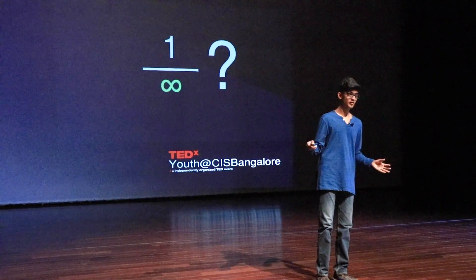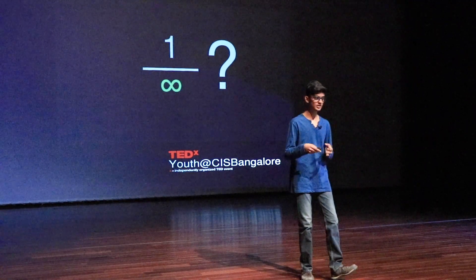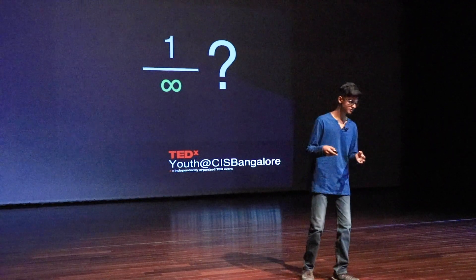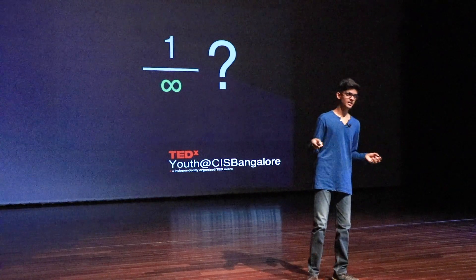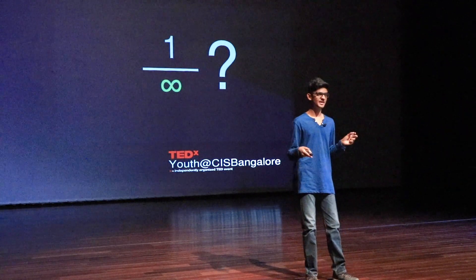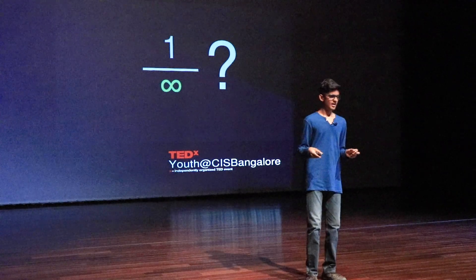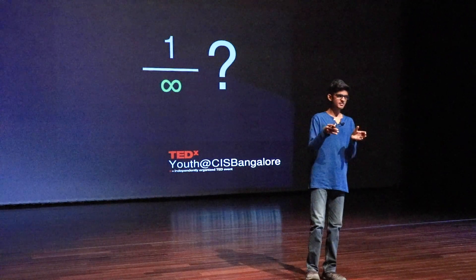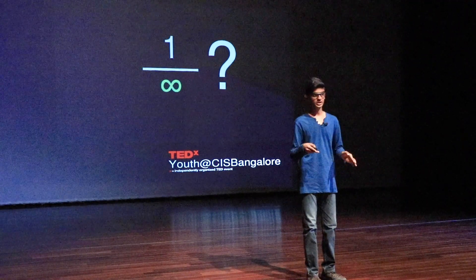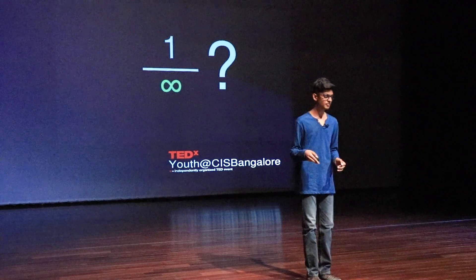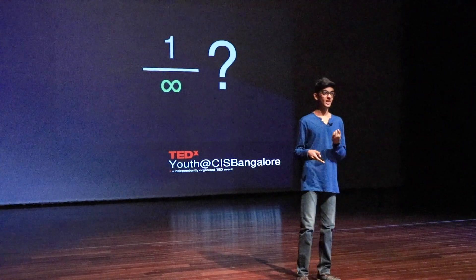What would 1 over infinity be? I can't really tell you what 1 over infinity is, but I can tell you what happens as you get closer and closer to it. As you would have already noticed, the length of the line kept getting shorter and shorter. The length kept approaching zero, but it never actually reached zero. In other words, zero was the limit.